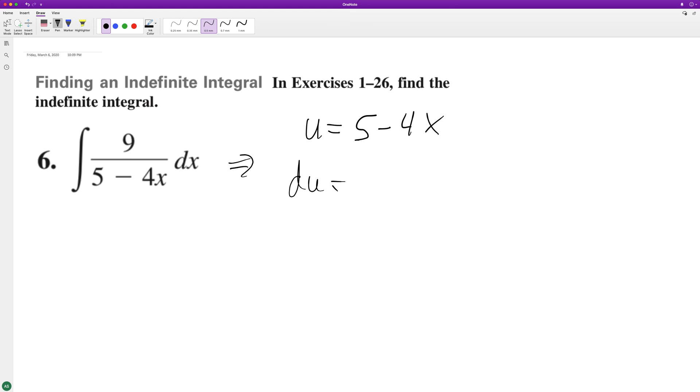du is going to be equal to negative 4. So we have 9 on top there. So we get du equal to dx. We need to multiply by negative 9 fourths.